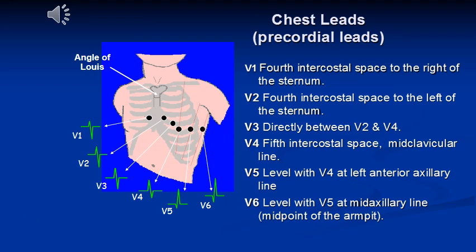This slide shows the placement of precordial leads, or chest leads, which are unipolar, similar in nature from V1 to V6.